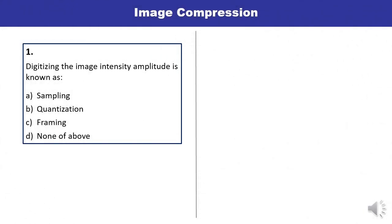Question 1: Digitizing the image intensity amplitude is known as quantization. You have studied that digitization along the coordinates is known as sampling, while along the intensity amplitude it is known as quantization. So B is the correct answer.